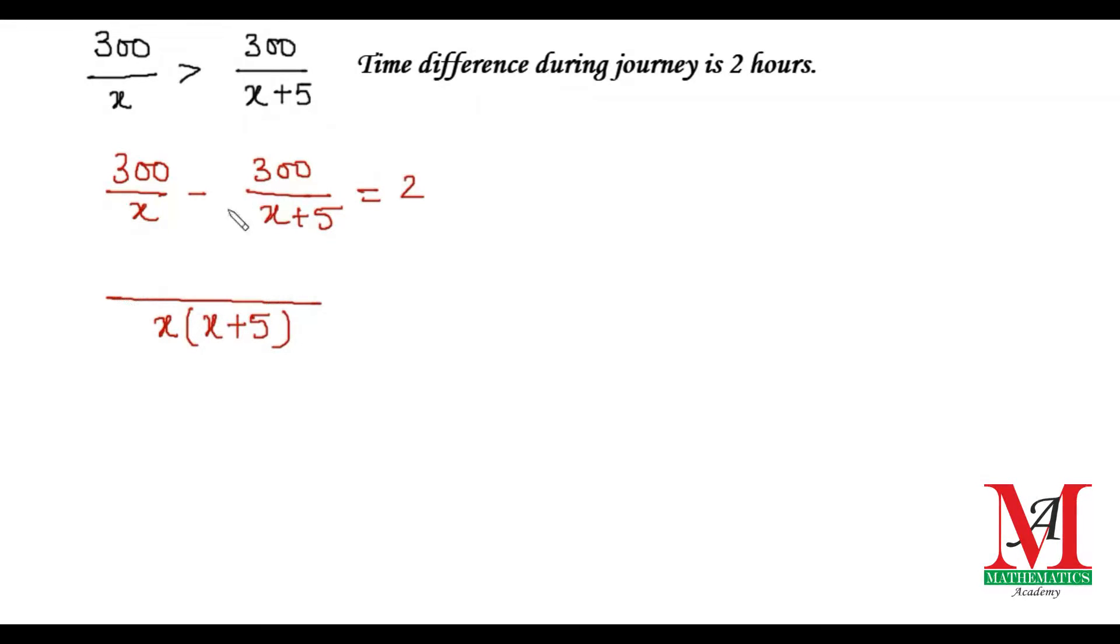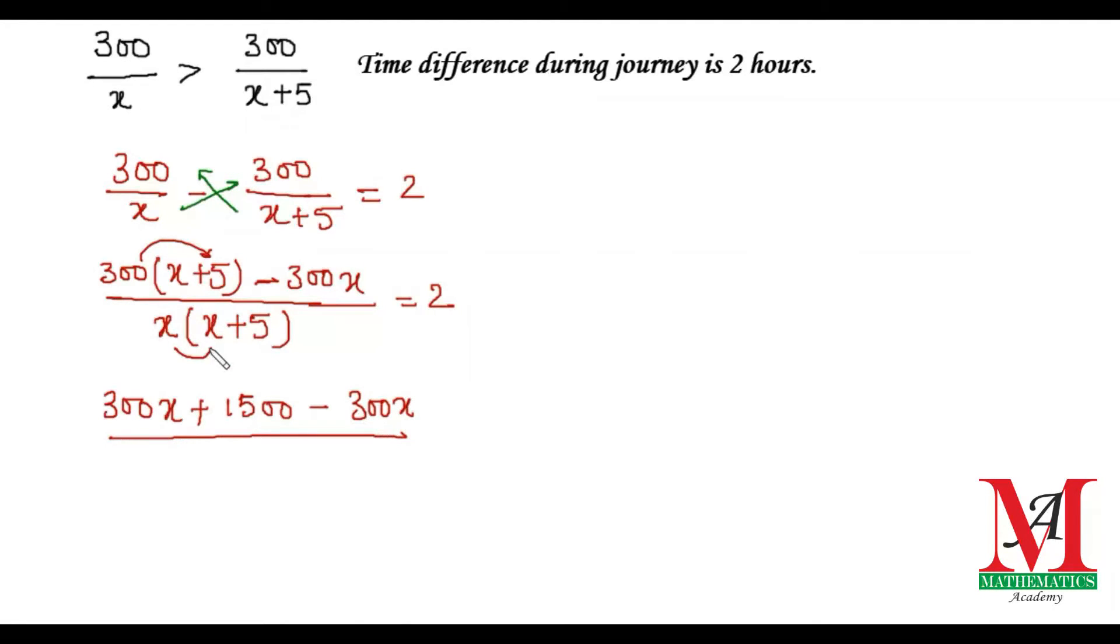Multiplying through, we get 300(x+5) - 300x equals 2 times x(x+5). On simplifying: 300x + 1500 - 300x. The 300x positive cancels with 300x negative, and we are left with only 1500 in the numerator.